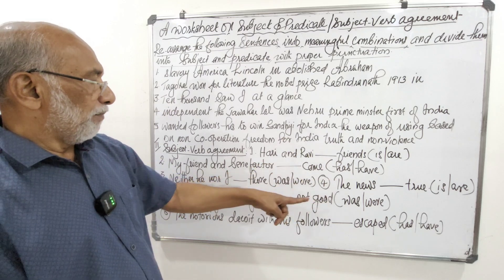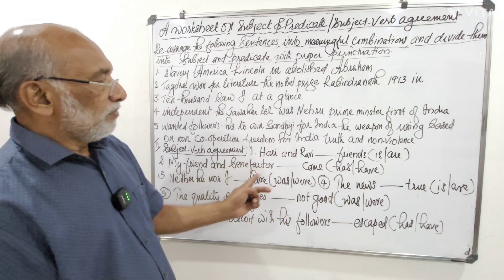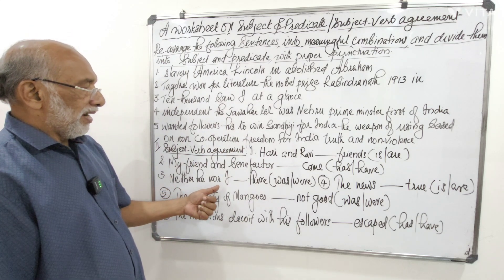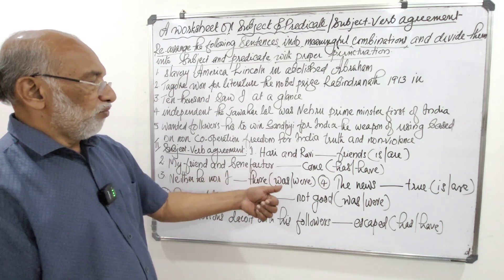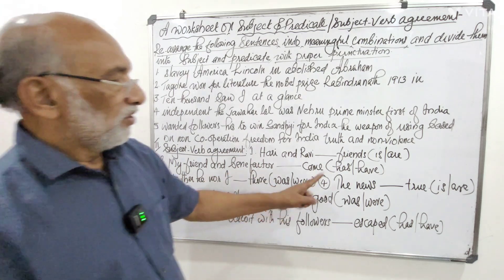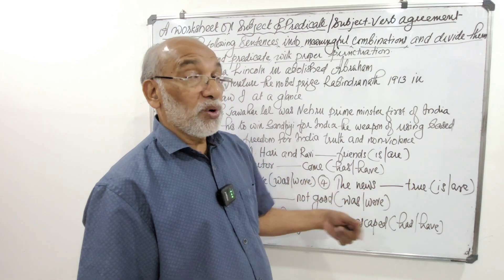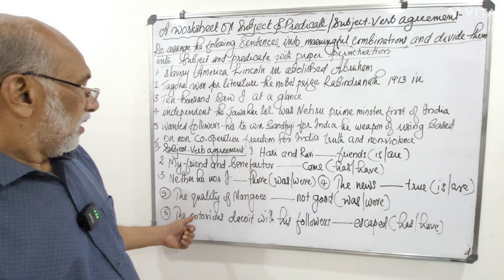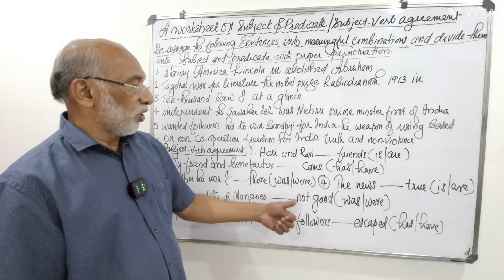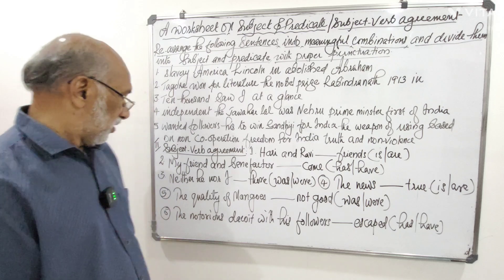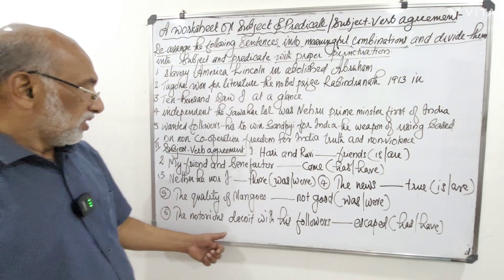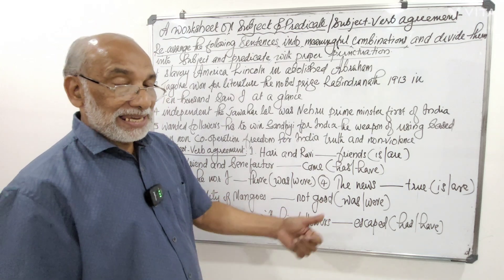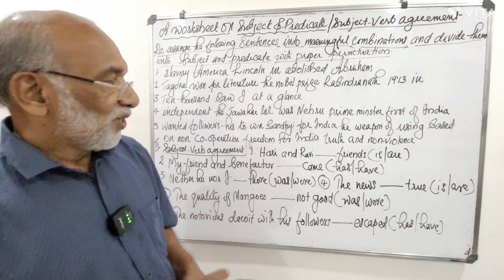Third: 'Neither he nor I dash there' — 'was there' or 'were there'? Fourth: 'The news dash true' — 'is true' or 'are true'? Fifth: 'The quality of mangoes dash not good' — 'was not good' or 'were not good'? Sixth and last: 'The notorious dacoit with his followers dash escaped' — 'has escaped' or 'have escaped'?